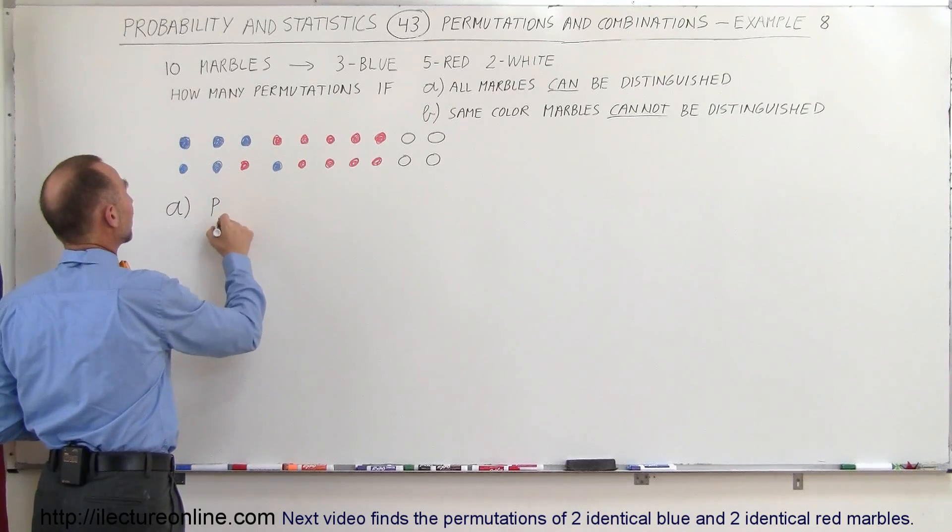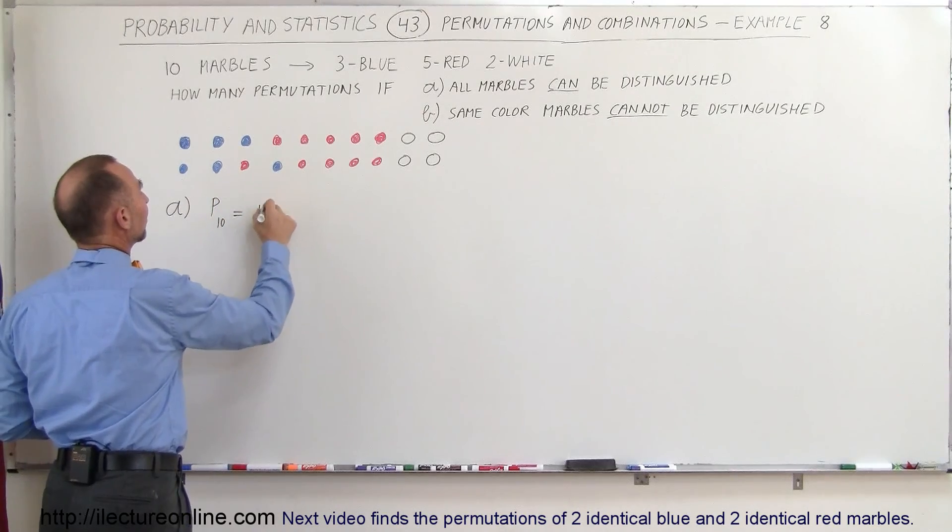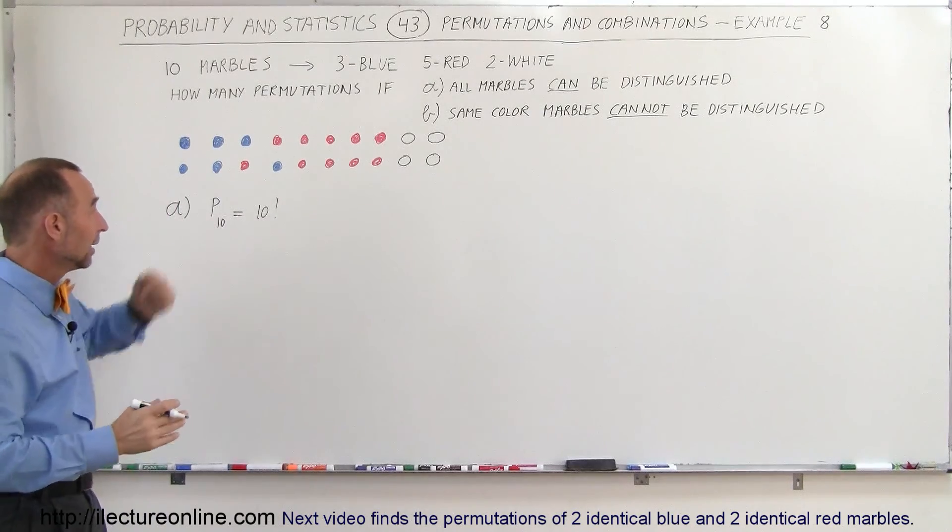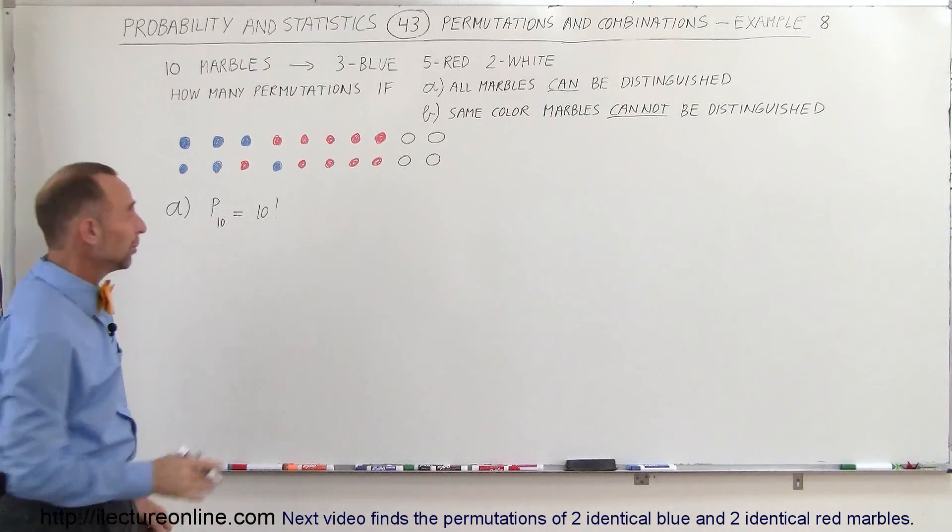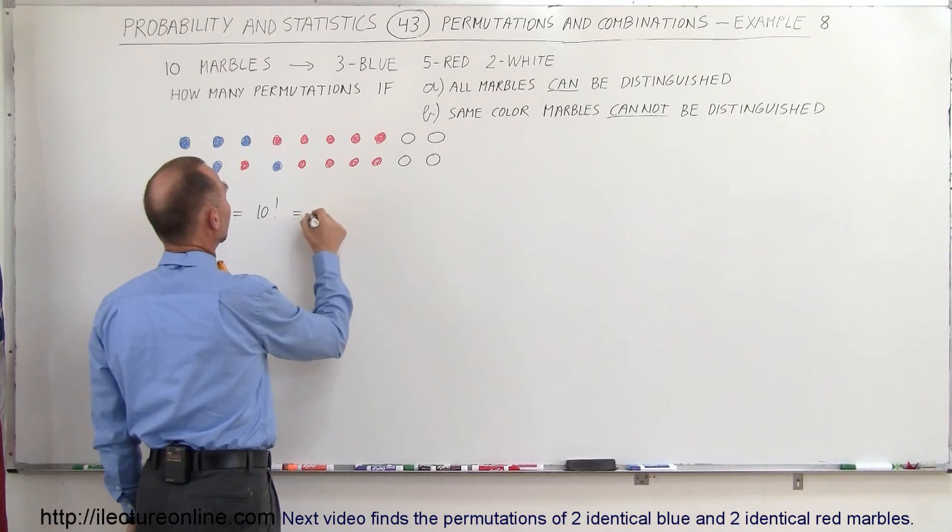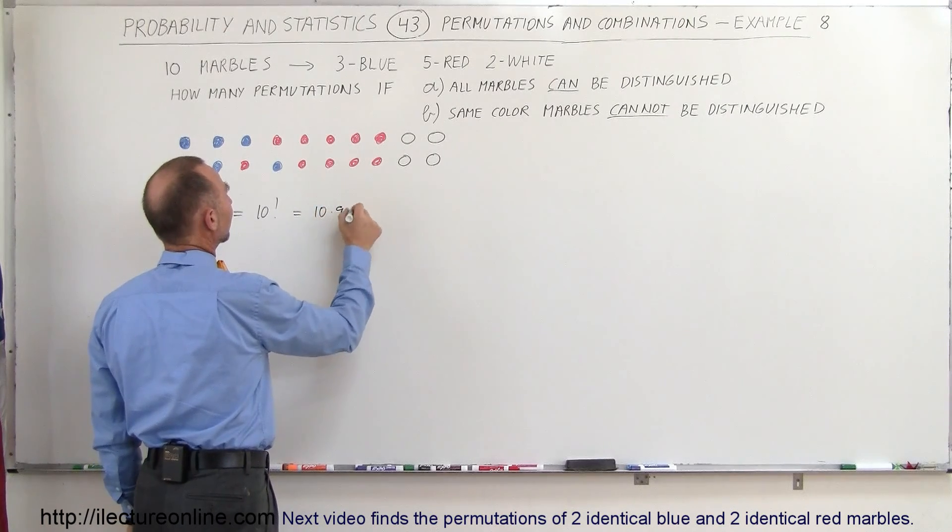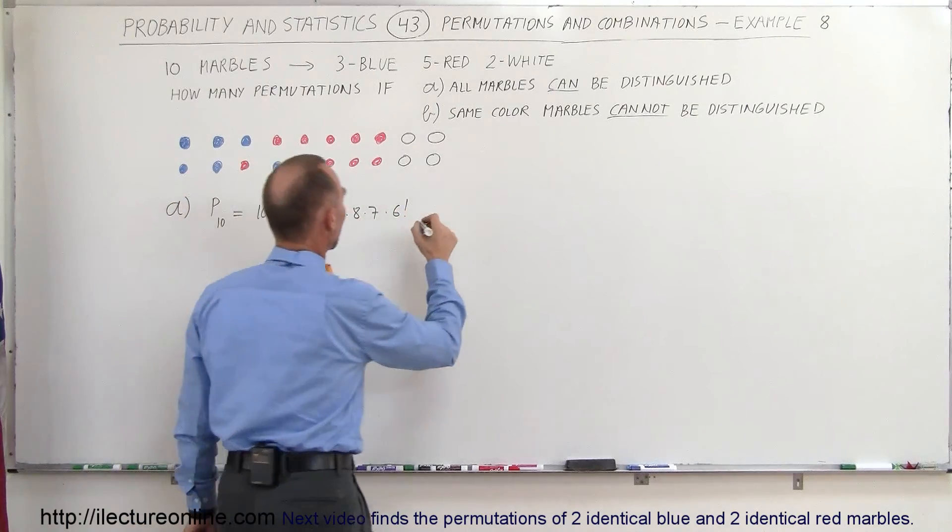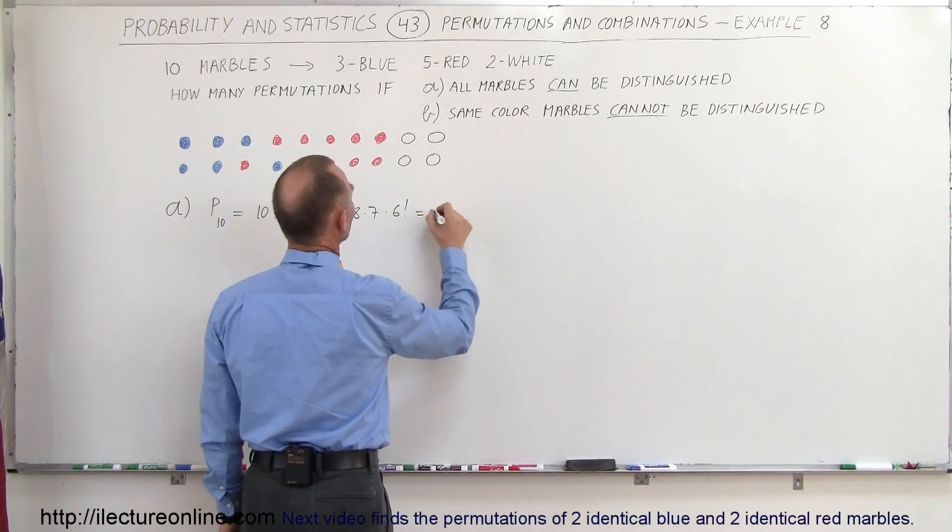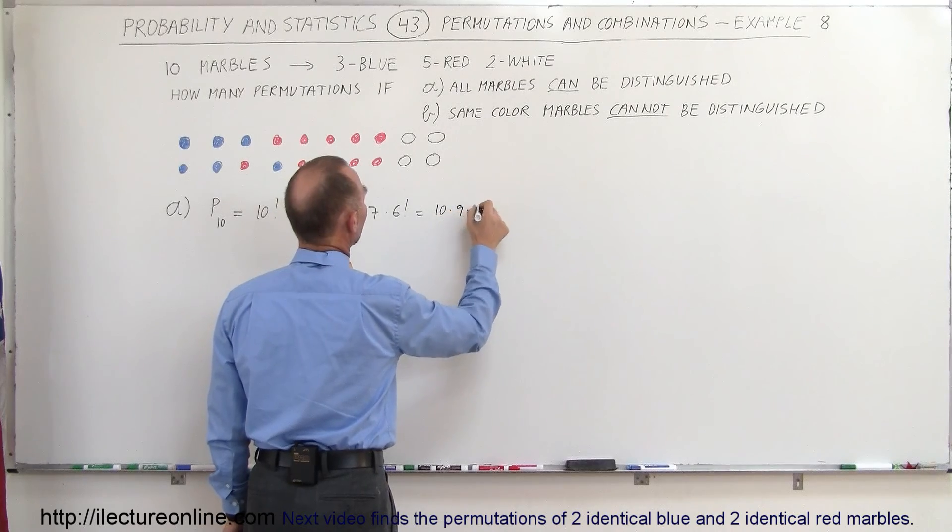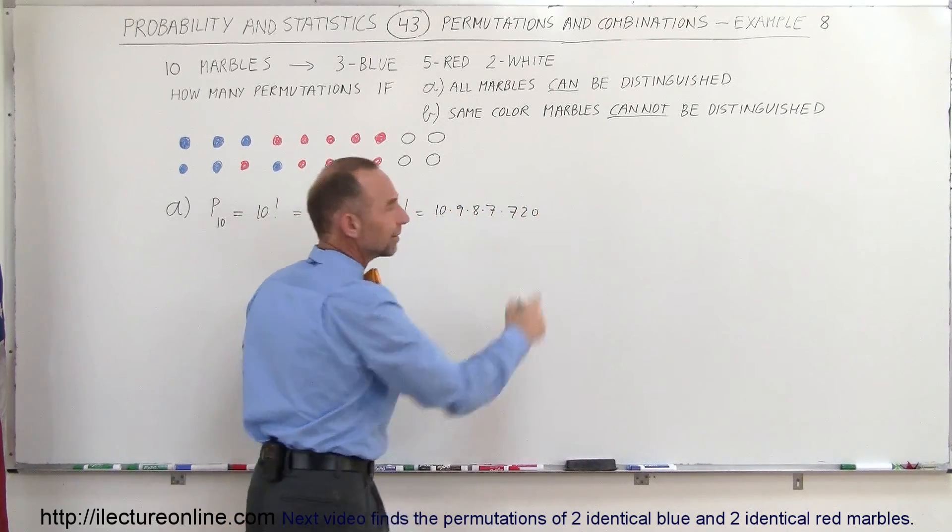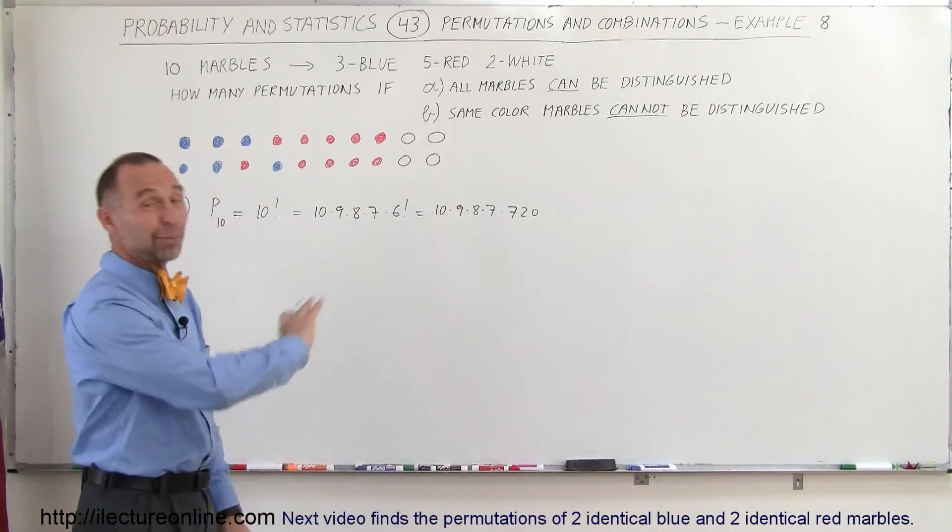The number of permutations when you have ten marbles is simply equal to ten factorial. Because if you can rearrange them any which way, it's equal to that, and that's a really big number. That's equal to ten times nine times eight times seven times six factorial, and six factorial, if I remember right, is 720.